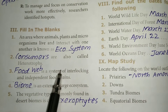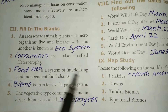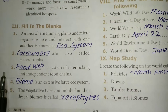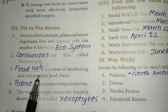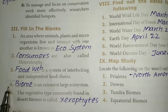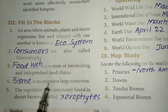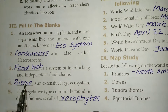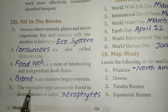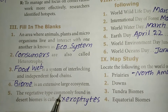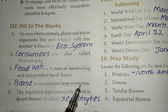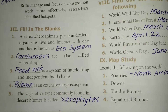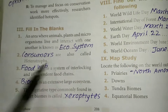Third one: blank is the system of interlocking and interdependent food chains — the answer is Food Web. Fourth one: blank is an extensive large ecosystem — the answer is Biome. Fifth one: the vegetative type commonly found in desert biomes is called — the answer is Xerophytes.